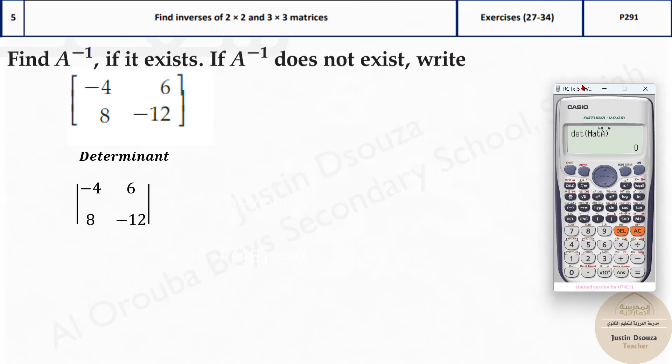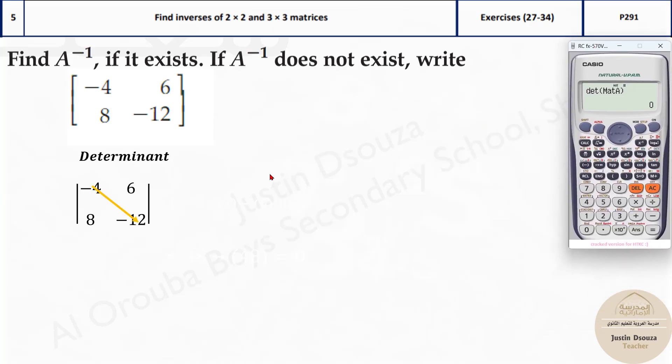Over here, I have done the written method. You can follow this as well. But the calculator method is more than enough. You just have to find the determinant. These opposite things are multiplied to each other and minus the other thing. So it's first left to right, minus right to left. And then find the determinant.